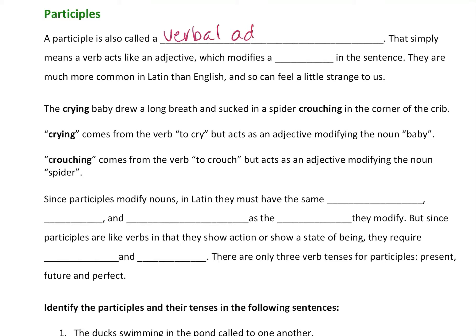A participle is also called a verbal adjective — and that's true in English too. It simply means the verb acts like an adjective. Do you remember the adjective questions: which one, what kind, how many? Participles answer those questions. An adjective modifies a noun, and participles are much more common in Latin than in English, so they can feel a little strange to us. In Latin they still must match gender, case, and number.